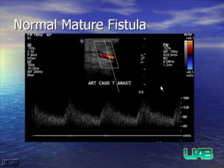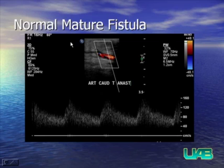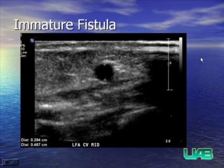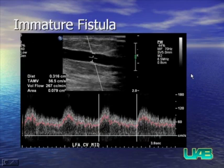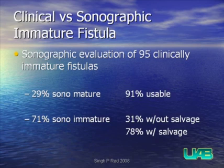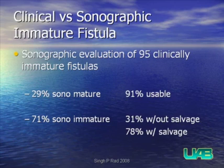We always examine the artery distal to the anastomosis to see whether there is still flow going to the hand. In this case, even though we are below the anastomotic site, flow is coming toward the transducer — toward the patient's head — showing reversal of distal arterial flow. Comparing this to an immature fistula: the diameter is 2.9 millimeters, below the 4-millimeter cutoff, and the volumetric flow is only 267 milliliters per minute. This raises the question of how sonographic maturity correlates to actual clinical fistula access.